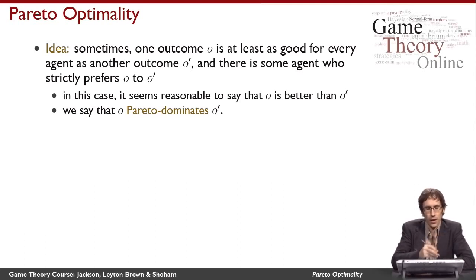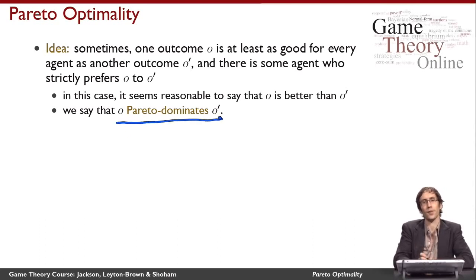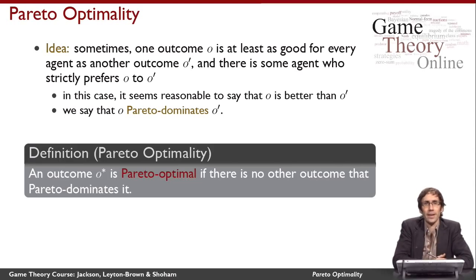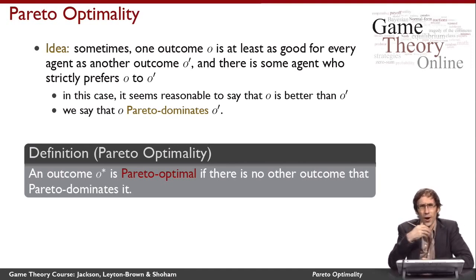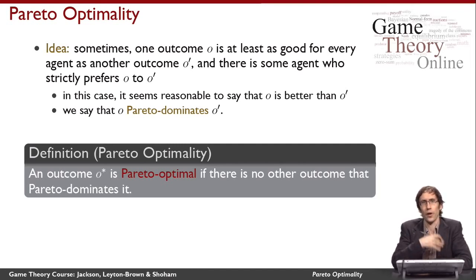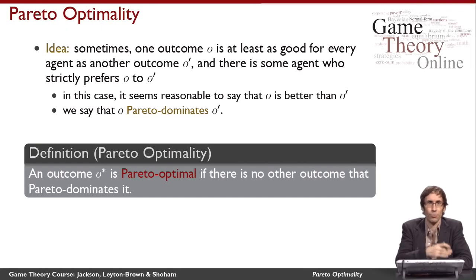Technically, the way we say this is that outcome O Pareto dominates O prime. Now I can define the concept of Pareto optimality: an outcome O* is Pareto optimal if it isn't Pareto dominated by anything. That's a definition in negative terms — an outcome O* is Pareto optimal if there's nothing else that it is Pareto dominated by, so there's nothing else I can prefer to it.